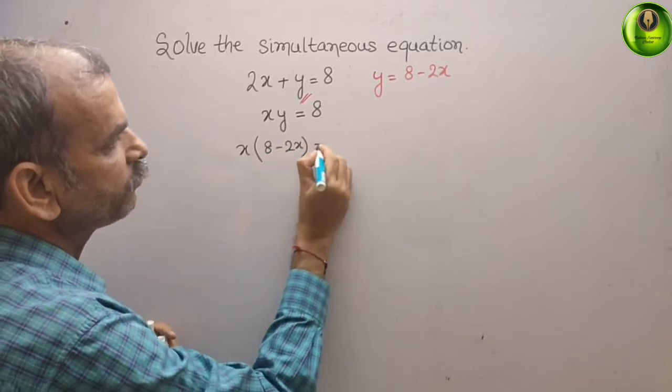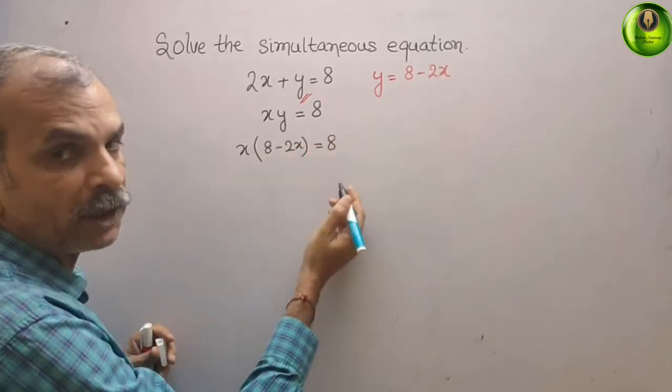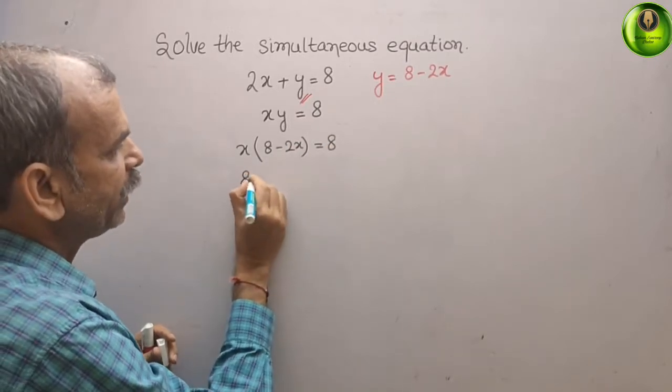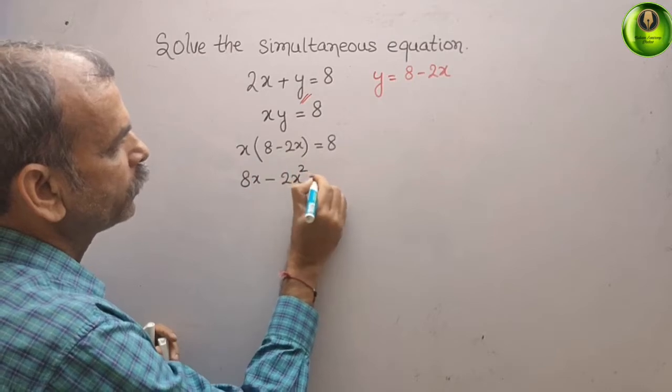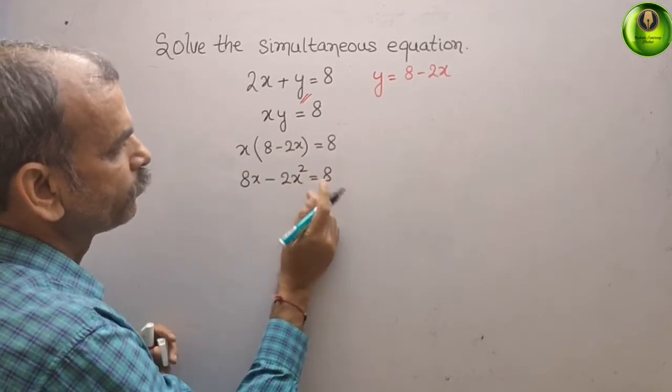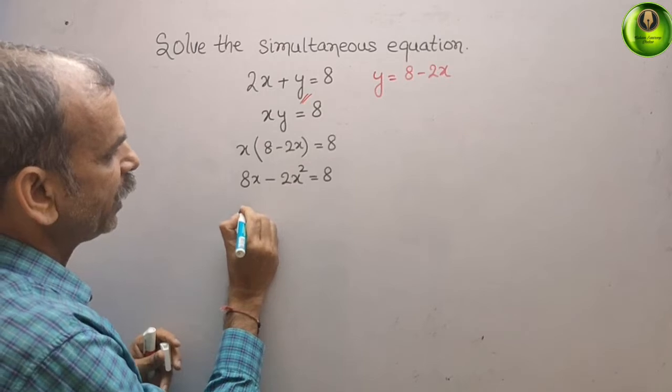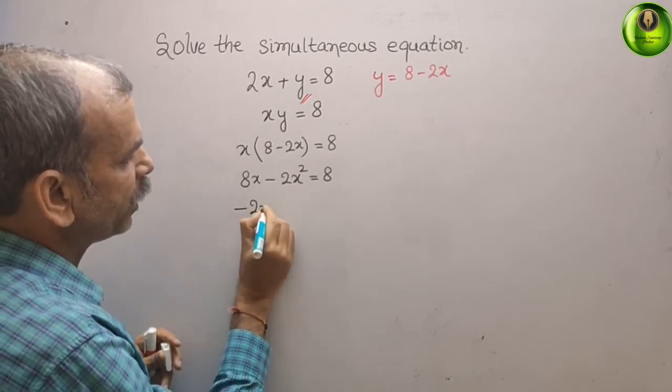That is equal to 8. Now multiply it, we get 8x minus 2x square. That is equal to 8. Bring this 8 to left side, we get minus 2x square.